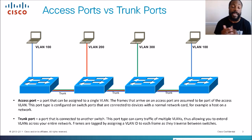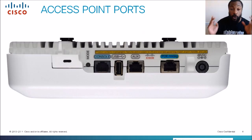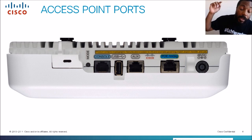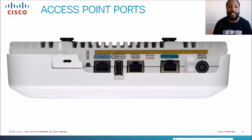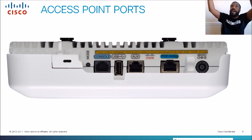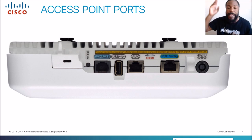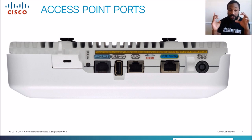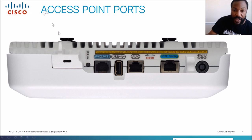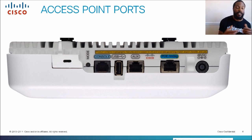Let's talk about the physical ports of an access point. An access point is basically a hotspot connected to the wall that gets you to the internet. Here are the physical interfaces of an access point: we have the console port, which is the port you connect to using a console cable to create a terminal session so you can configure the AP.